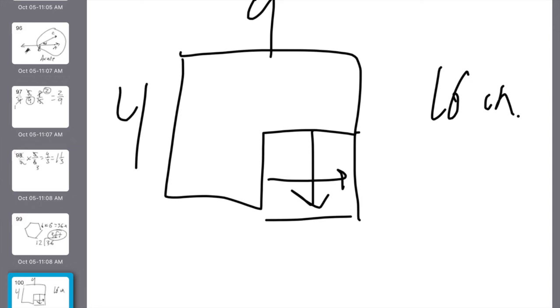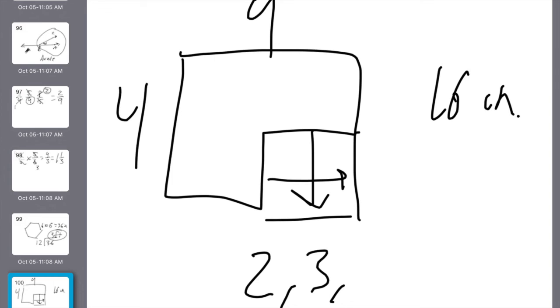30. Which negative integer is the opposite of the third prime number? Prime number. First one's two. Next one's three. Next one's five. What's the opposite of five? Negative five. So your answer is which negative integer? Negative five.